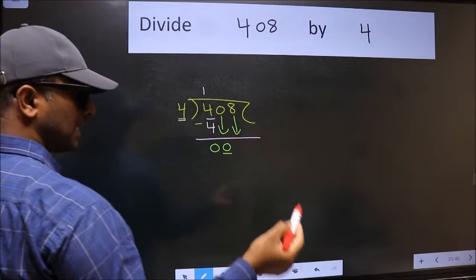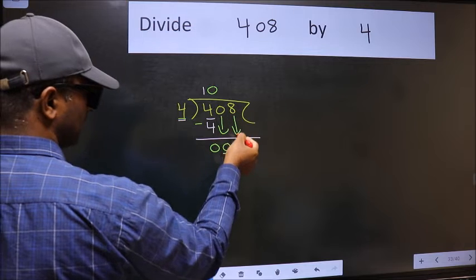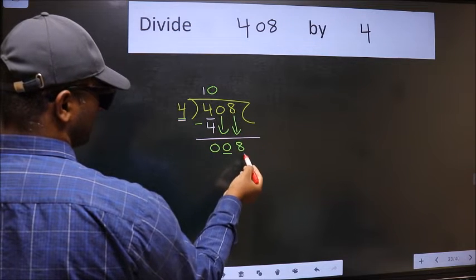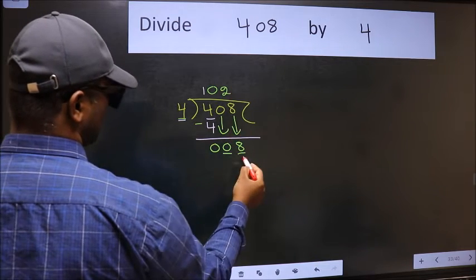And the rule to bring down the second number is we should put 0 here. Then only we can bring this number down. Now 8. When do we get 8 in the 4 table? 4 times 2 is 8.